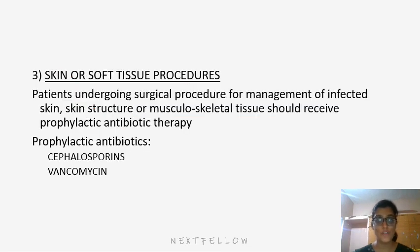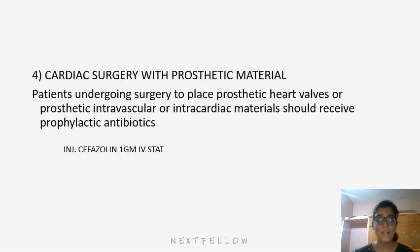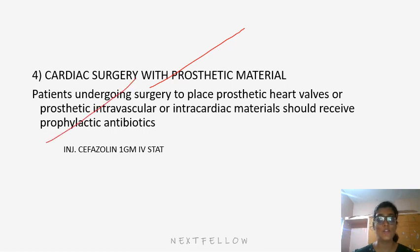For skin or certain soft tissue procedures, patients undergoing surgical management of infected skin, skin structure, or musculoskeletal tissue should receive prophylactic antibiotic therapy — either a cephalosporin or vancomycin. For cardiac surgery with prosthetic material, patients undergoing surgery to place prosthetic heart valves or prosthetic intravascular or intracardiac materials should receive prophylactic antibiotics, most commonly cefazolin 1g IV stat.